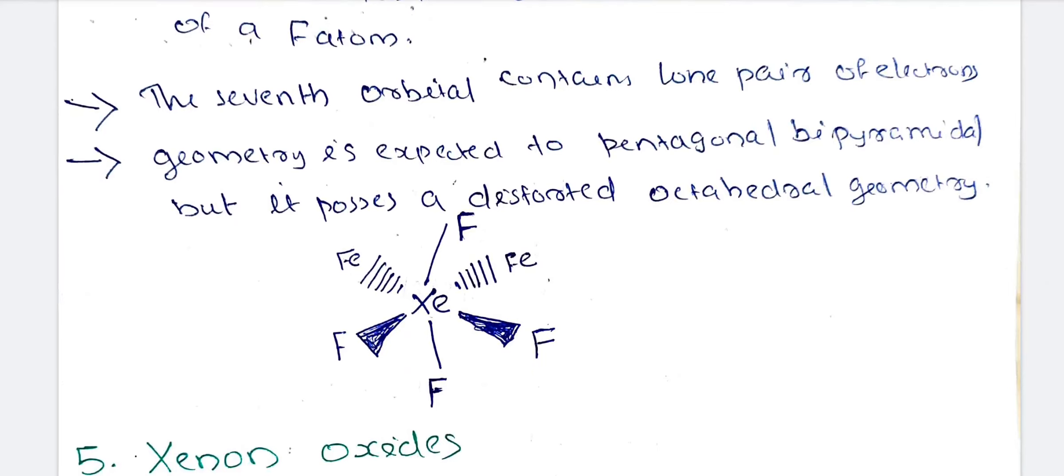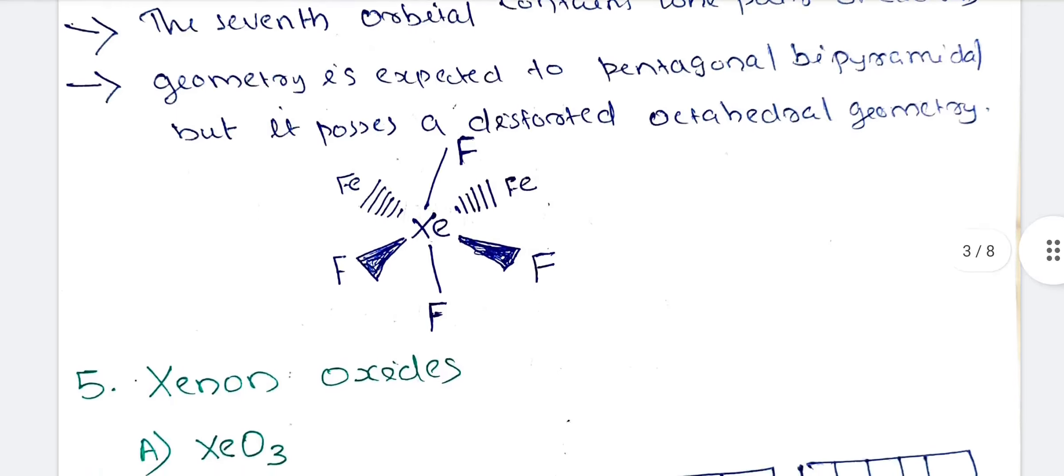All half-filled orbitals form bonds and the seventh orbital contains a lone pair. The geometry is expected to be pentagonal bipyramidal, but it possesses a distorted octahedral geometry. The actual geometry is pentagonal bipyramidal, but it possesses distorted octahedral geometry.